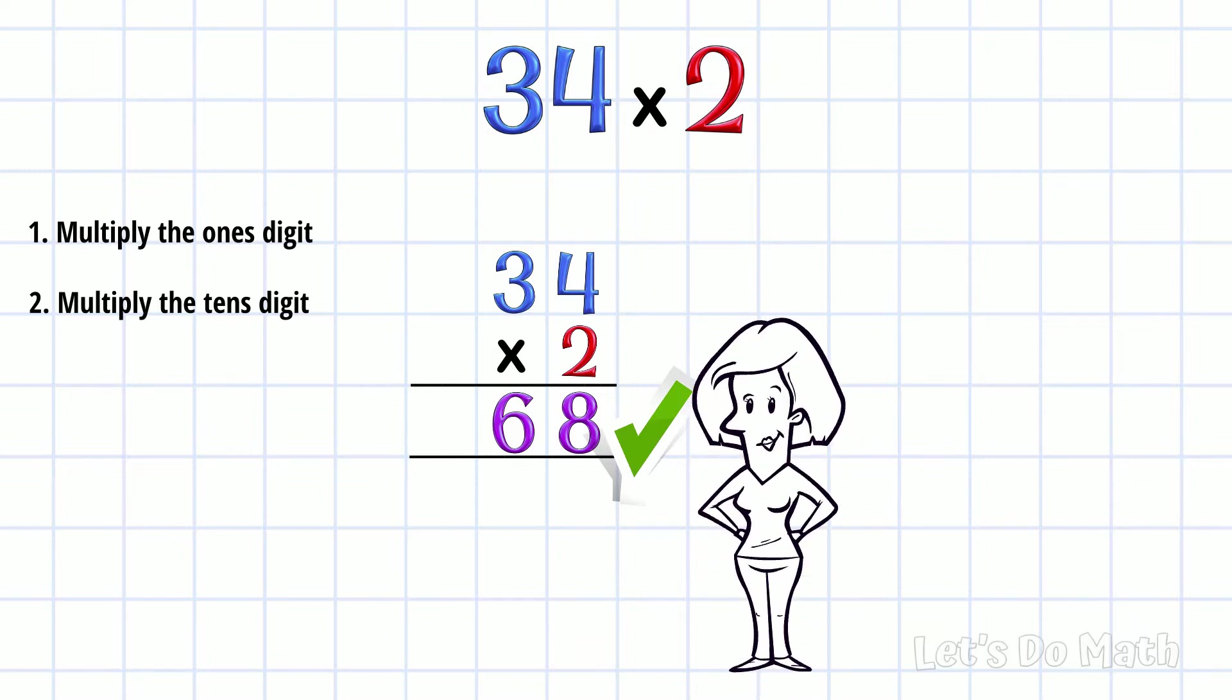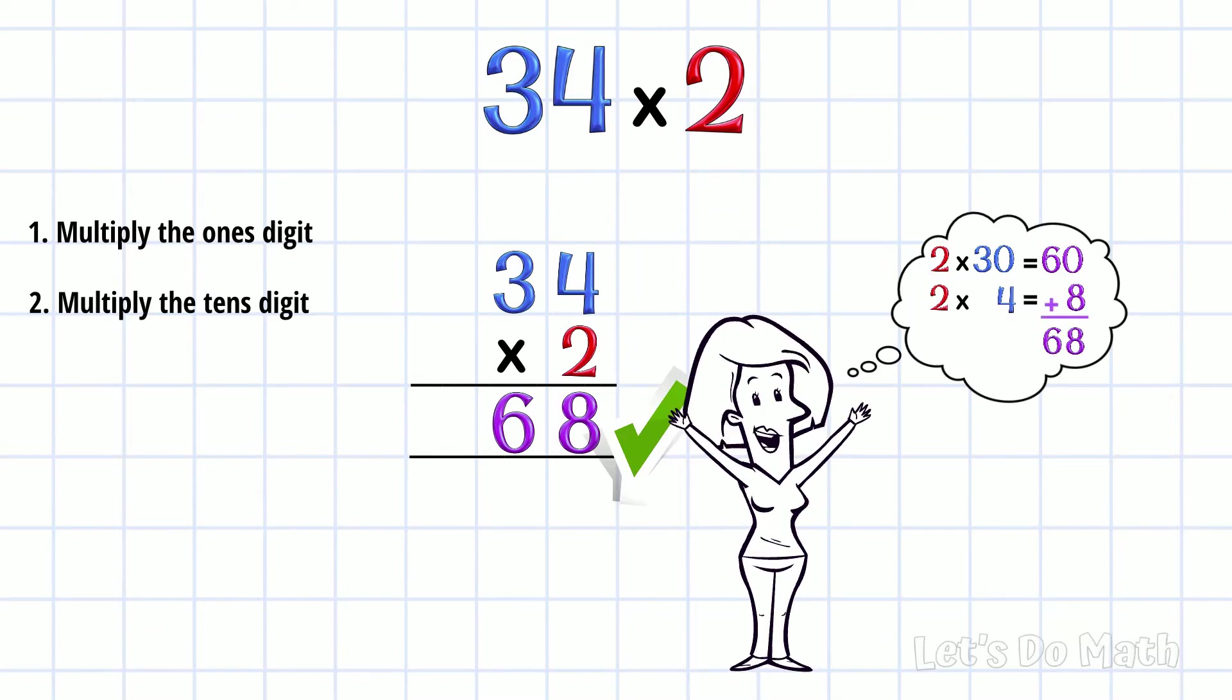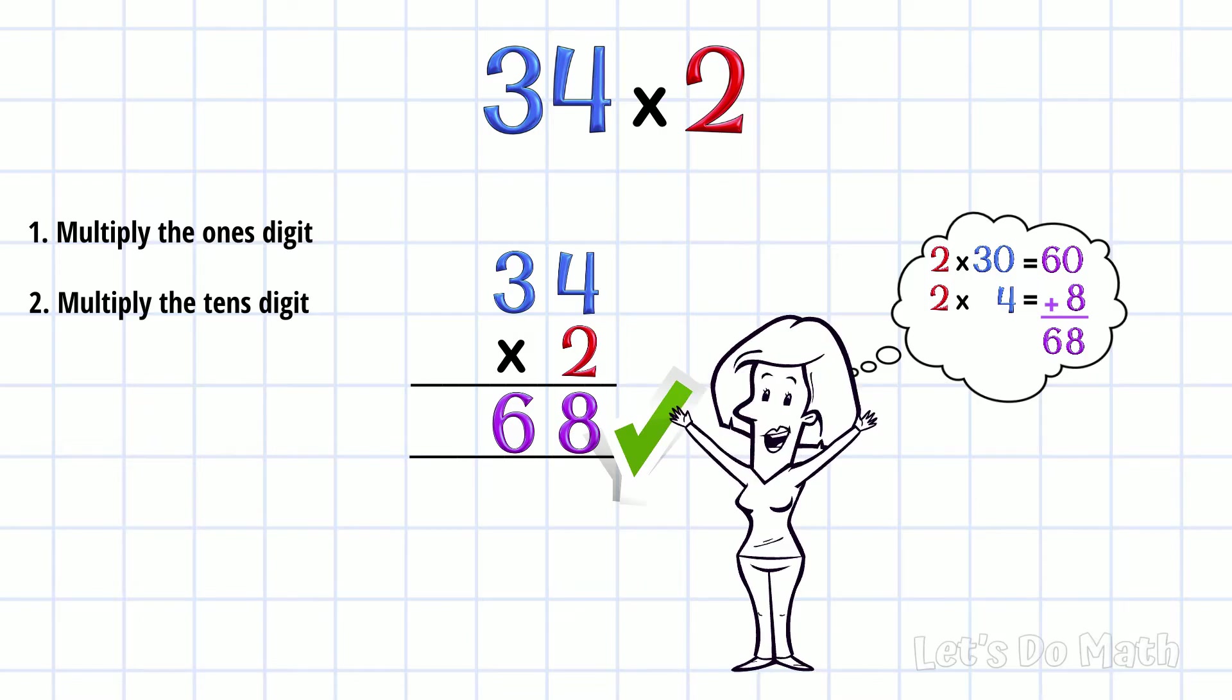Think about that for a moment. 2 lots of 30 is 60, and 2 lots of 4 is 8. And together, that is 68! Great stuff! This is so going to make your life in math class easier.